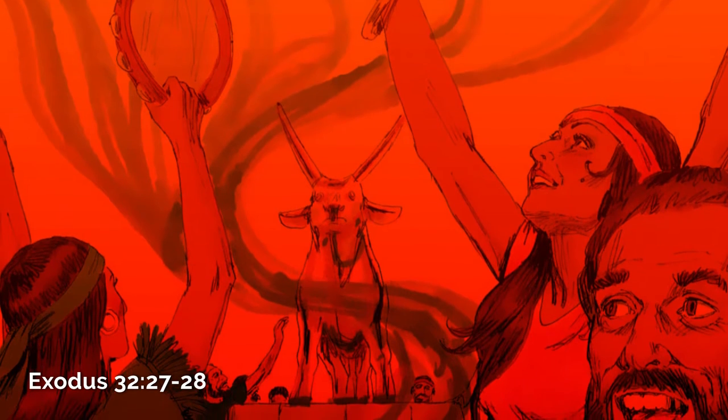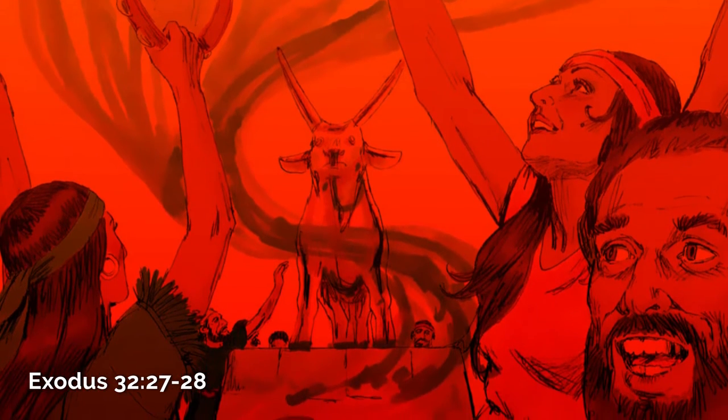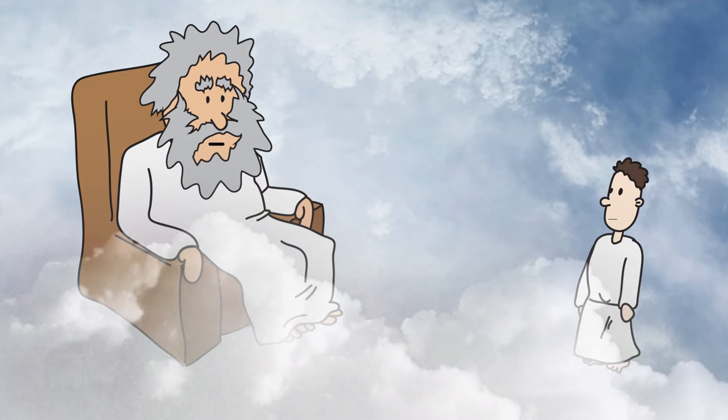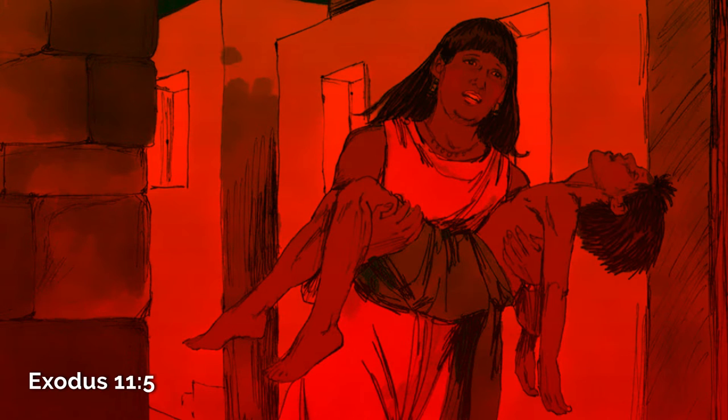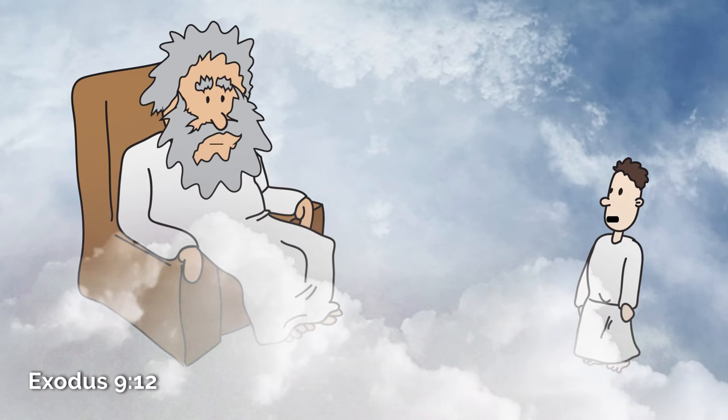But when the newly freed children of Israel worshipped a golden calf, you didn't kill them all for violating your law. Well, I had them kill each other. But only like 3,000 people died? I'd call that mercy. Okay, but killing all the firstborn Egyptian children? Justice. Even though you manipulated the pharaoh to resist you, resulting in their death? Eh, I'd still call it justice.